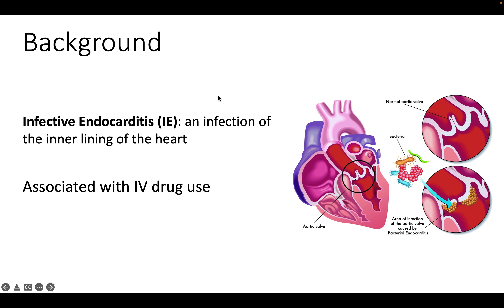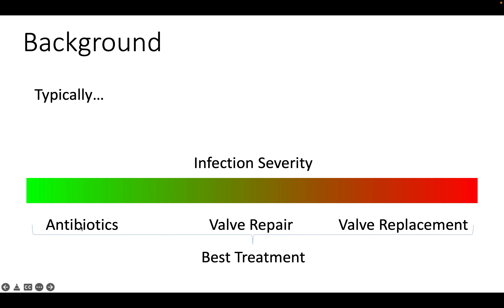A little bit of background on the clinical example I'm going to use: there's this thing called infective endocarditis, which is an infection in the valve of the heart — it could be a couple of valves — and it's particularly associated with IV drug use, although that's more of a newly common demographic. Previously, it was just immunocompromised demographics like the elderly. With those demographics who don't use IV drugs, based on the severity of the infection — like how large the infected area is — there's a natural progression, with antibiotics being the standard when it's not very severe, and as it builds in severity, it jumps to valve repair, to valve replacement being the best option.